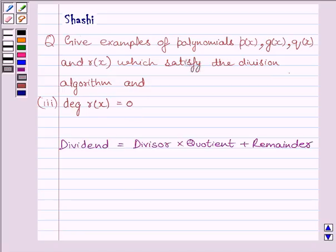First of all, we should know that dividend is equal to divisor multiplied by quotient plus remainder. That is, Px is equal to Gx multiplied by Qx plus Rx.